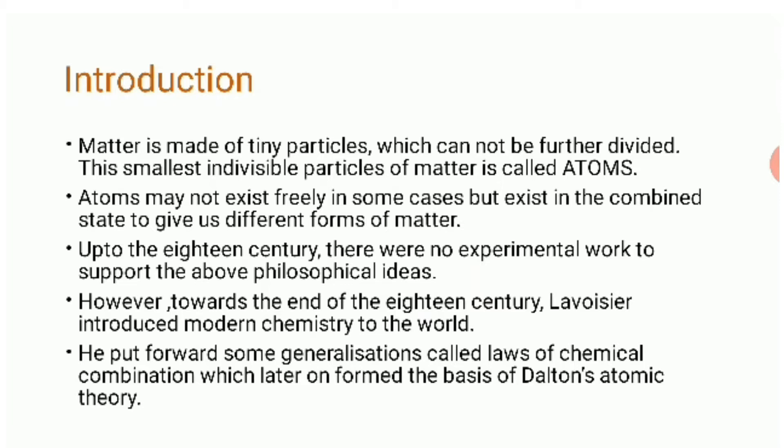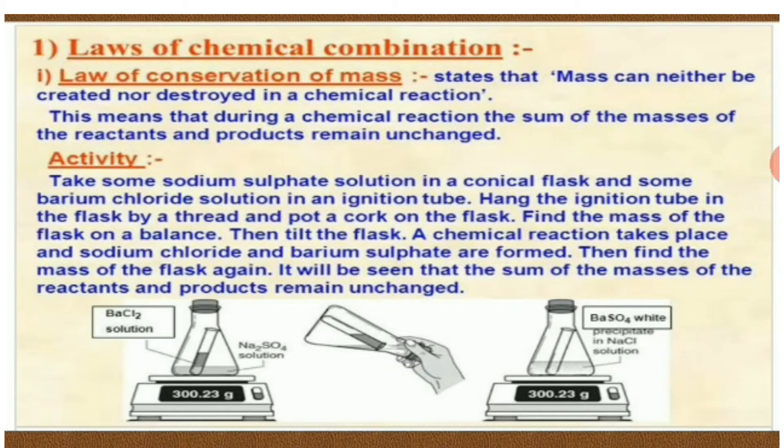Earlier there was no experimental work to support these philosophical ideas, but toward the end of the 18th century, the scientist Lavoisier introduced modern chemistry to the world. He put forward some generalizations known as the law of chemical combination, which later formed the basis of Dalton's atomic theory. We will study two laws of chemical combination: the first is the law of conservation of mass.